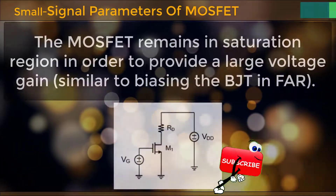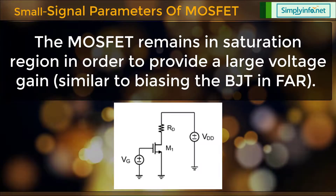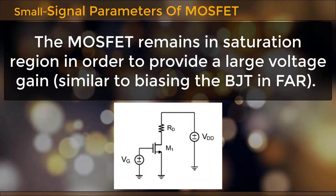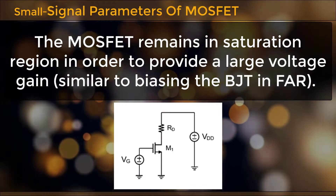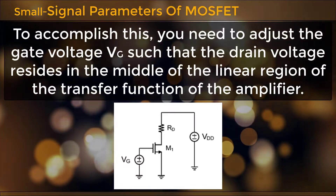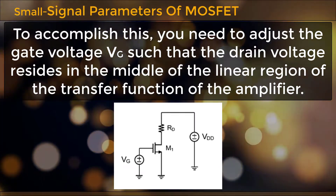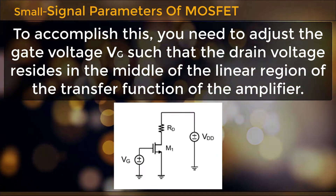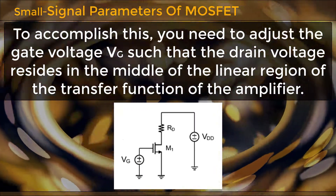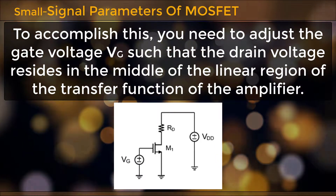The MOSFET remains in the saturation region in order to provide a large voltage gain, similar to biasing the BJT in the forward active region. To accomplish this, you need to adjust the gate voltage VG such that the drain voltage resides in the middle of the linear region of the transfer function of the amplifier.